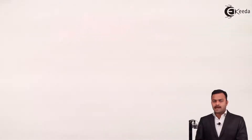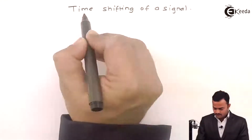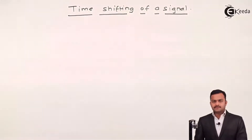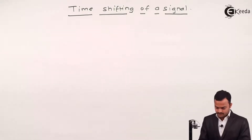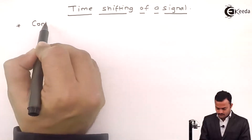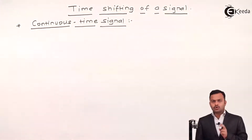Hi students, in this video we are going to see a time-shifting operation of a signal. As the name suggests, we are just shifting the signal on the x-axis or horizontal axis — in our case it will be t or n. This time-shifting property has two parts. Let's discuss this first with respect to continuous time signal. The two operations we can have: one is called time delay, and the other is time advance.